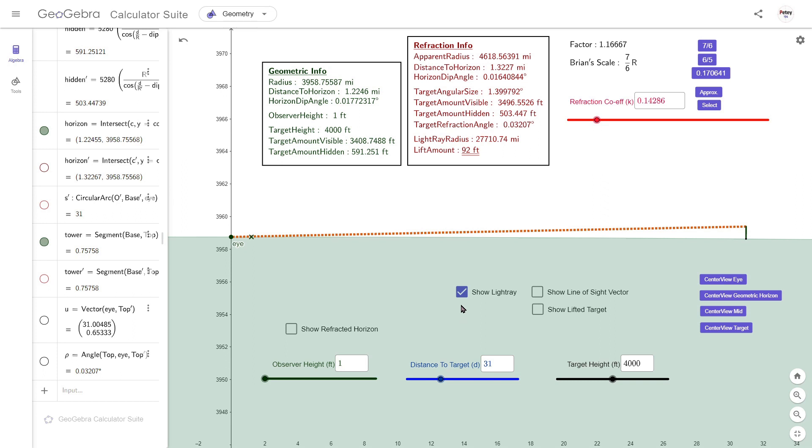So if I switch off the light ray, turn on refracted objects, refracted horizon, which is this little red cross that's just appeared. And it's 1.322 miles from the observer. We have a new line here set by our effective radius. That's 4618. Our red line here signifies our tower or our target. And that is still 4000 feet.